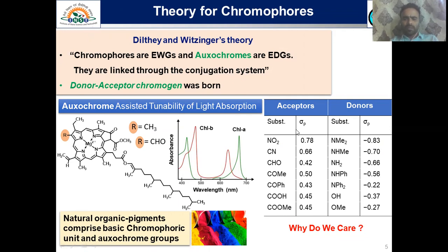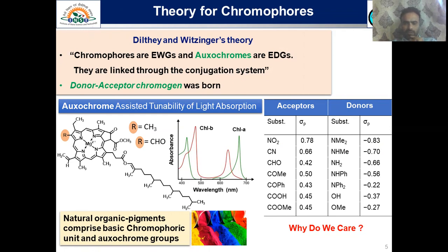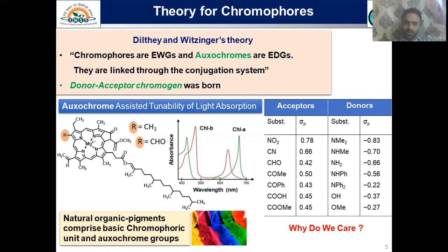The question is: why do we care about the functional groups, or the donor and acceptor groups present in a molecule? Different donor and acceptor functional groups have different Hammett constant values, which is the parameter set by physical organic chemistry for determining the reactivity of different organic molecules. For example, the nitro group has a Hammett constant value of 0.78, and the NMe2 group has a value of minus 0.83, which is the highest known value for reactivity in cycloaddition reactions.